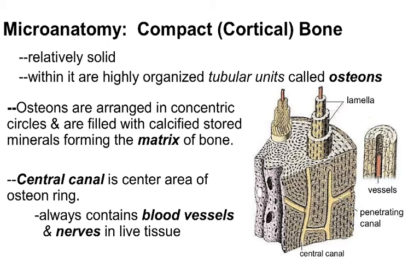If you look in detail at compact bone, at a section through it, you will see that it's made up of very organized units called osteons. These are referred to as tubular units because if we take a flat section, it just looks like a bunch of concentric circles next to each other. But if we pull out a single osteon, we can see that it's made up of concentric rings of bone — sort of like tree rings — and those are called lamella.